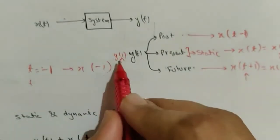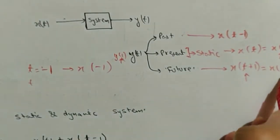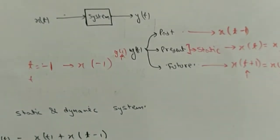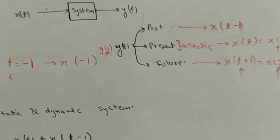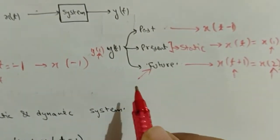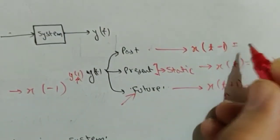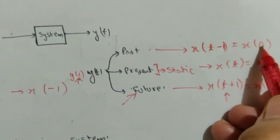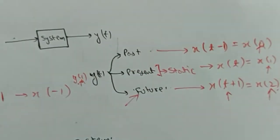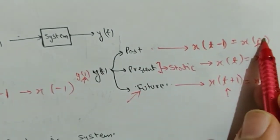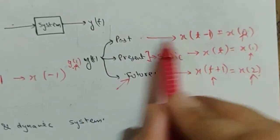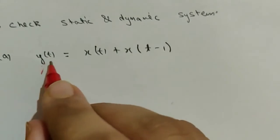If y(t) = x(t+1), put t = 1: you get x(2) and y(1). So for input at 2 seconds you get output at 1 second — output is received before input is applied, therefore it depends on future values. For past dependency, put t = 1 in x(t-1): you get x(0) and y(1), so input is applied at 0 and output received at 1 second — output depends on past values.